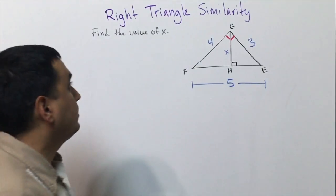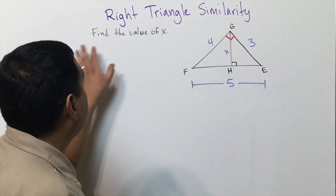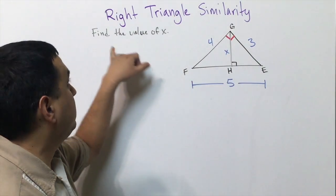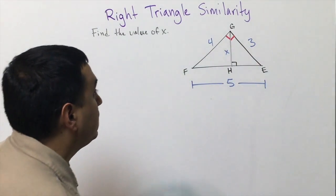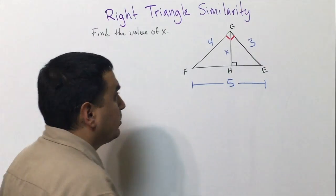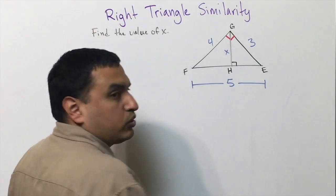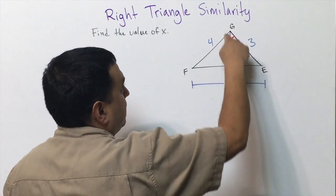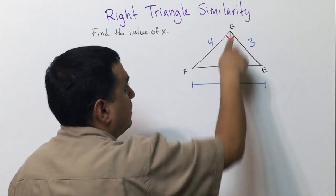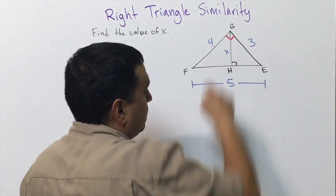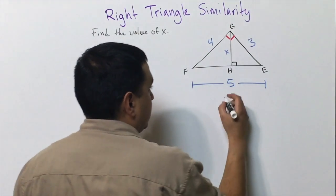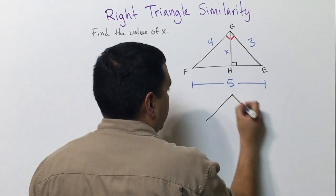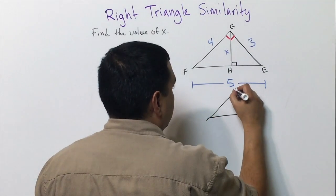Now I'm going to show you what I mean by inserting some numbers in here to find the value of x. These sides are proportional, so what I'm going to do is draw this triangle right here and kind of rotate it around so that it's facing the same way as this triangle here.